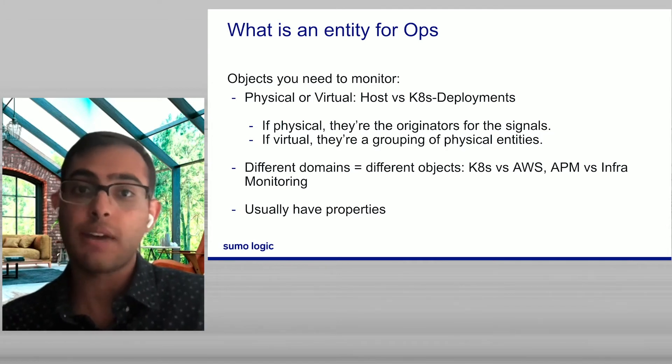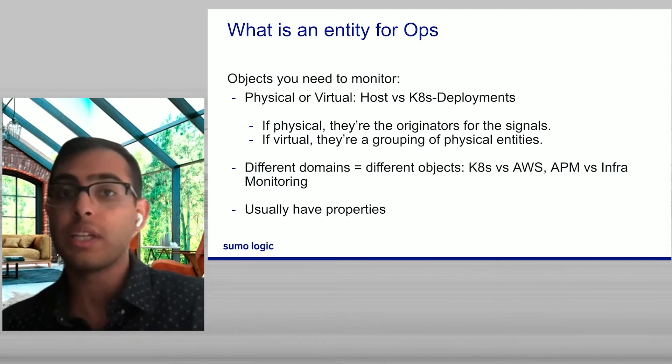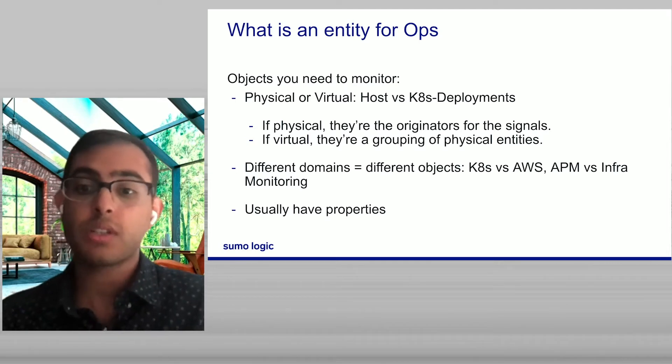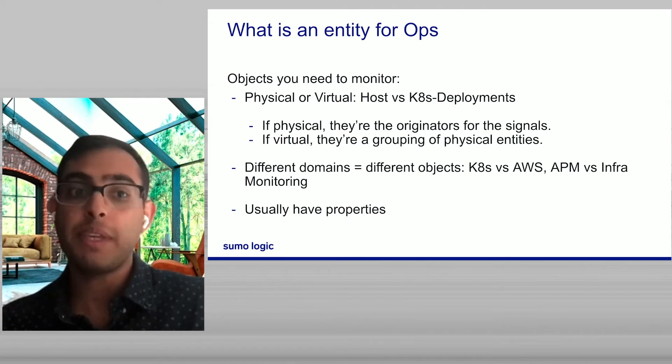And once again, different domains have a different sense of what objects will be at play. For Kubernetes, you're going to have things like deployments, namespaces, pods. For AWS, you might have physical things like hosts, RDS instances, Lambda functions, et cetera. Similarly, APM and infra monitoring will all have different objects that need to be described. And they all seem to have a set of properties that help bind together the current state and the current function of any of those entities.